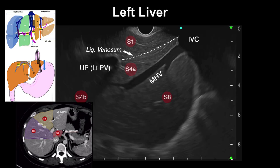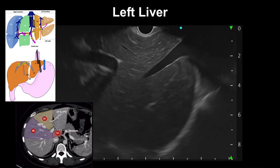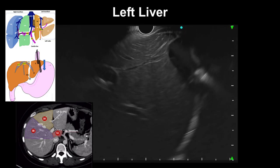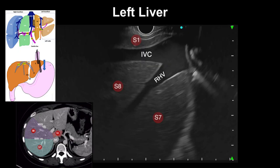Segment 4b can be seen below the umbilical portion of the left portal vein in the lower left part of the screen. By following the middle hepatic vein and pushing the scope further into the stomach, then on minimal withdrawal and clockwise rotation, the right hepatic vein can be seen along with the IVC, separating segment 1 — closer to the transducer — from segment 8, which is divided from segment 7 by the right hepatic vein.